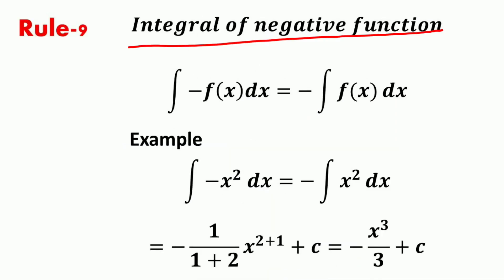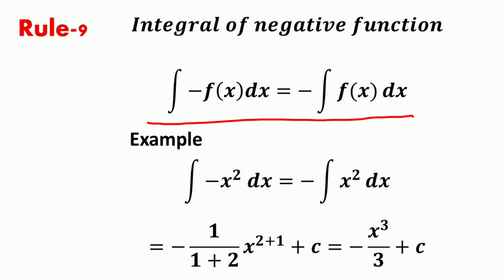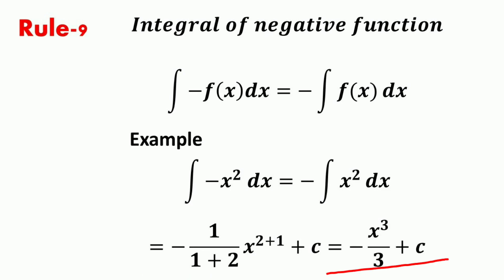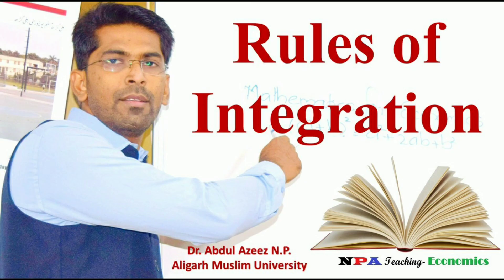The next rule is that the integral of the negative of a function equals the negative of the integral of that function. That is, the integral of −f(x) dx equals minus the integral of f(x) dx. For example, the integral of −x² dx equals minus the integral of x² dx, which equals minus (1/3)x³ plus c, or equivalently −x³/3 plus c. I hope you are clear about the various rules of integration. In the next video we will discuss integration by substitution and integration by parts. Have a nice day and see you in the next video. Thank you.